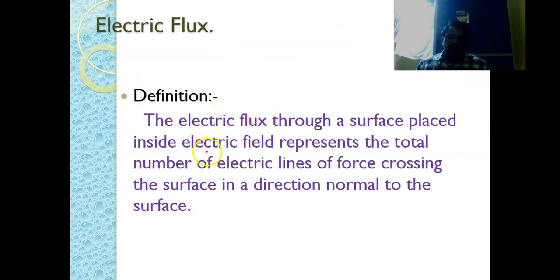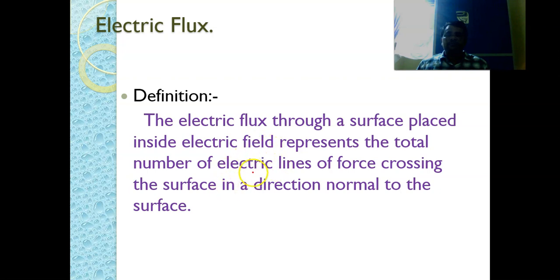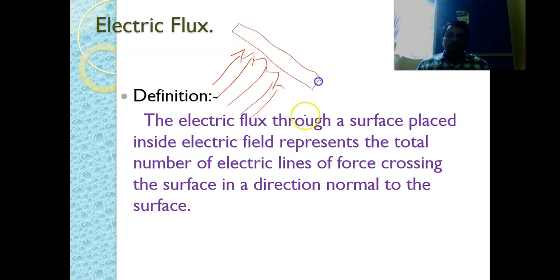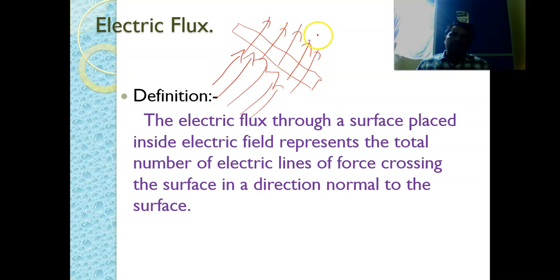Now let us formally define electric flux. The electric flux through a surface placed inside an electric field represents the total number of electric field lines of force crossing the surface in a direction normal to the surface. The number of electric lines passing through a unit area is called electric flux.